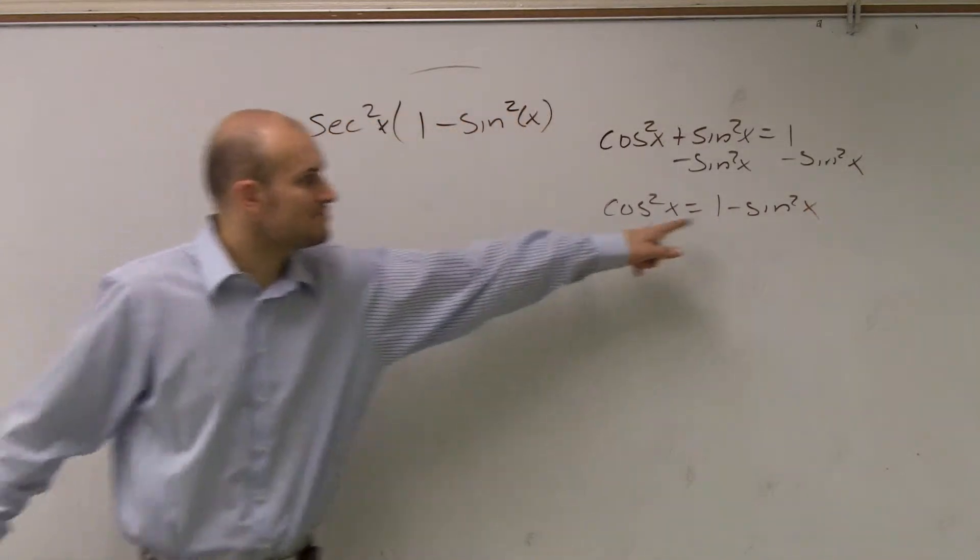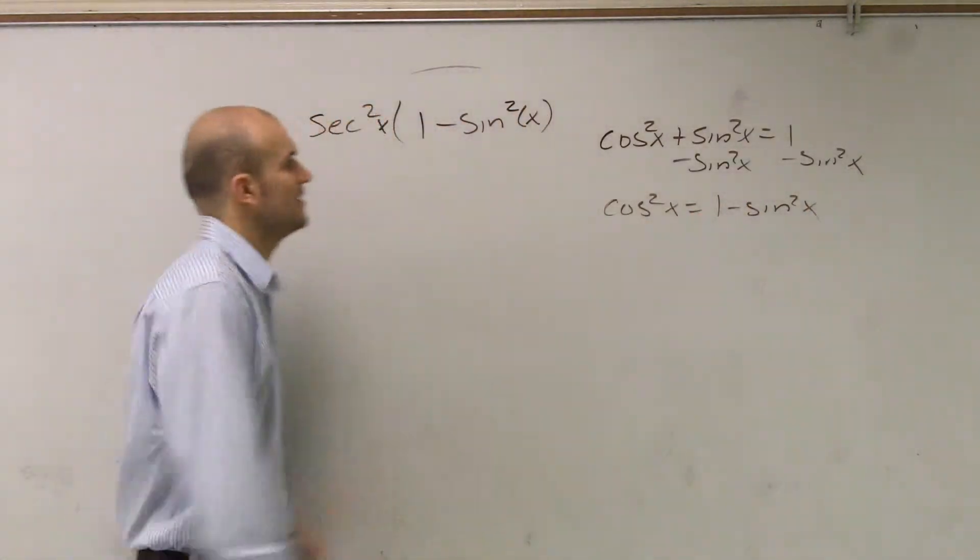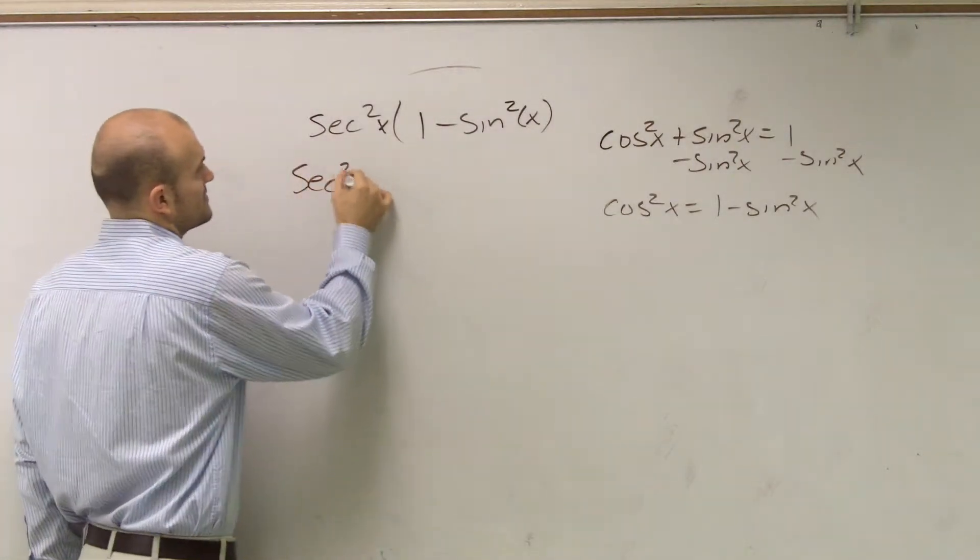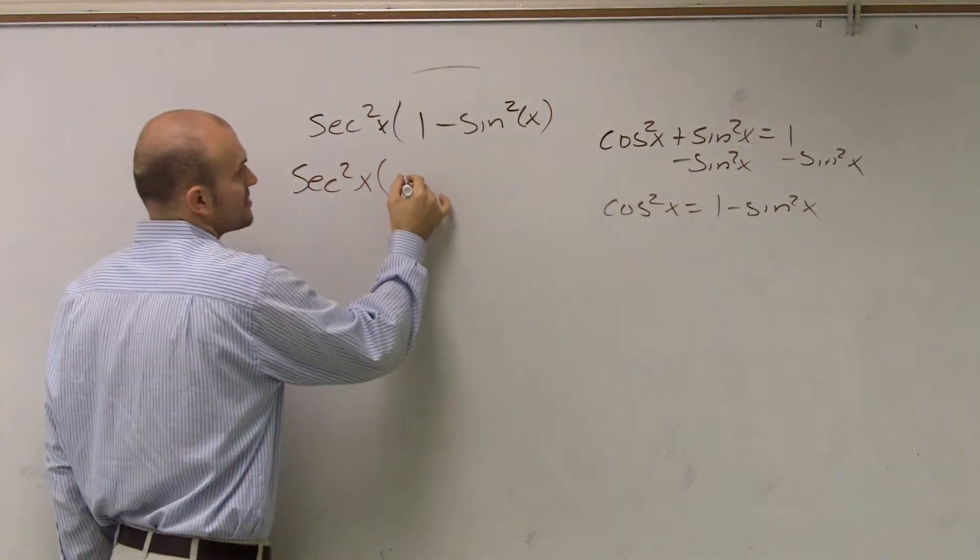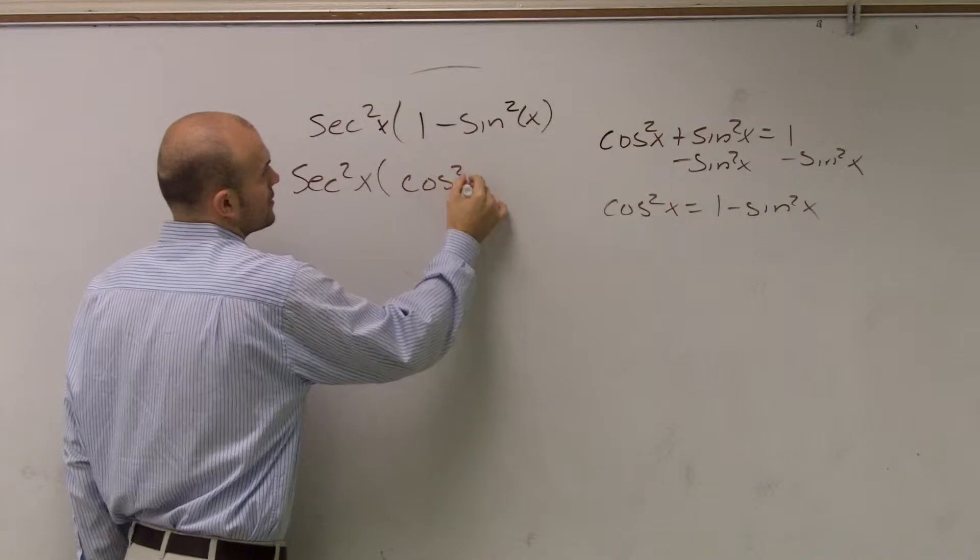Right? So let's plug, instead of writing that, let's write a simpler cosine for that. So I have secant squared of x times cosine squared of x.